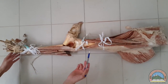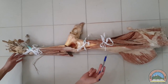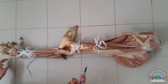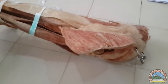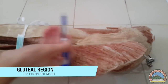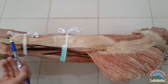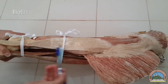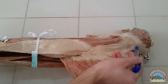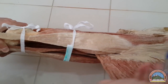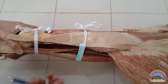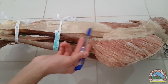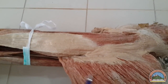Now we are going to talk about the lower limb on the second plastinated model, lateral view. This is the anterior view of the left side, just to get the orientation. Now we are going to talk about the gluteal region. This is the lateral view. This is the iliotibial tract — it begins all the way from here. It originates from the iliac crest of the hip bone and inserts into the lateral condyle of the tibia. It receives the insertions of the tensor fascia latae and gluteus maximus muscles.